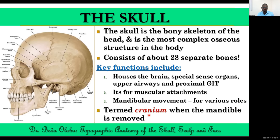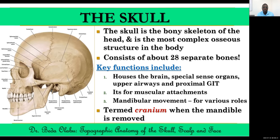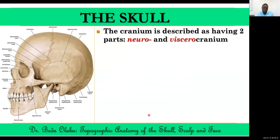Occasionally we use the term cranium when referring to the skull. The distinction is that the cranium is the skull without the mandible. So the skull is the whole thing, and the cranium is the skull without the mandible. We divide the cranium into two parts: the neurocranium and the viscerocranium.